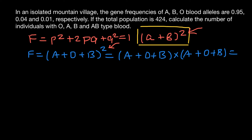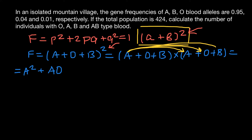Those who know how to expand this trinomial can skip the next few minutes. First, we multiply A by A to get A², then A by O to get AO, then A by B to get AB.